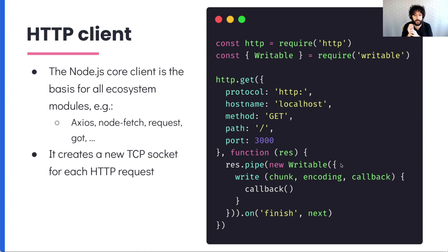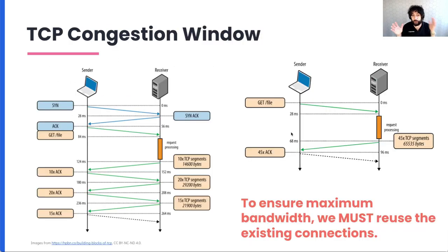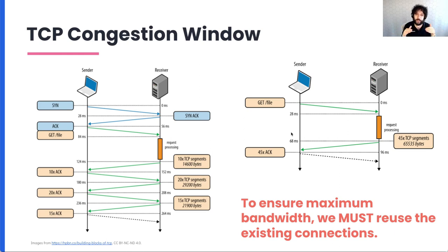Creating a socket involves several round trips with the server. When you establish a new socket, you need to do a SYN — send a SYN IP packet, which then needs to be replied to by the server. This is a back and forth and you are actually losing milliseconds. On a very fast network like a server environment, this is not a huge problem, but you still have to allocate file descriptors in your operating system, and there's a limited amount of these things you can use.